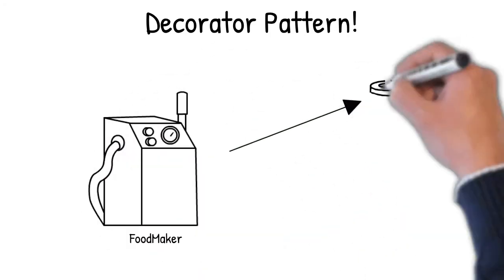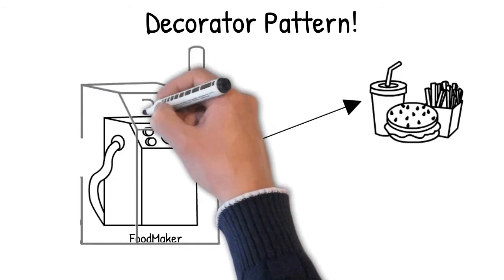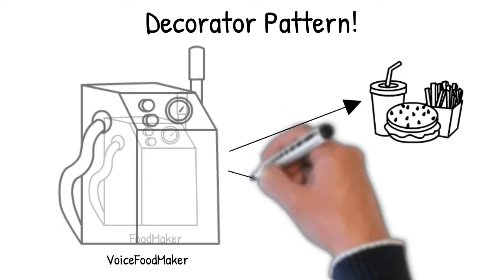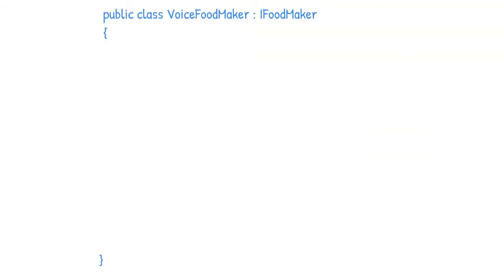Coming back to our original example with the food maker, we will now apply a wrapper — also called a decorator — on top of the food maker and call it VoiceFoodMaker. The role of VoiceFoodMaker is to utilize the food maker to produce the food and also to play the music whenever food is ready. Applying the decorator pattern is simple: create a VoiceFoodMaker class that also implements the same interface as the food maker. VoiceFoodMaker is just a decorator — it doesn't have its own logic to produce food.